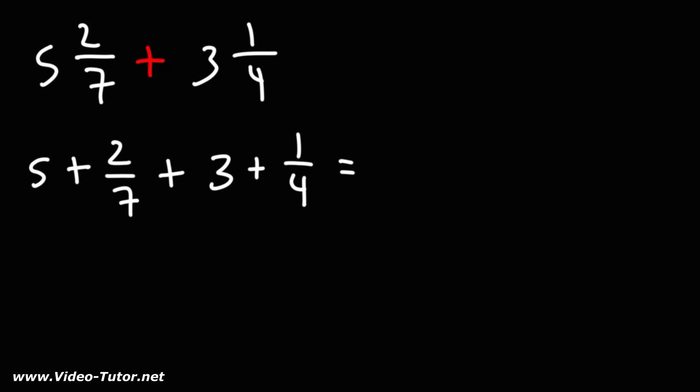So next, let's add the whole numbers, five and three. Five plus three is eight, and we're left with two over seven plus one over four.